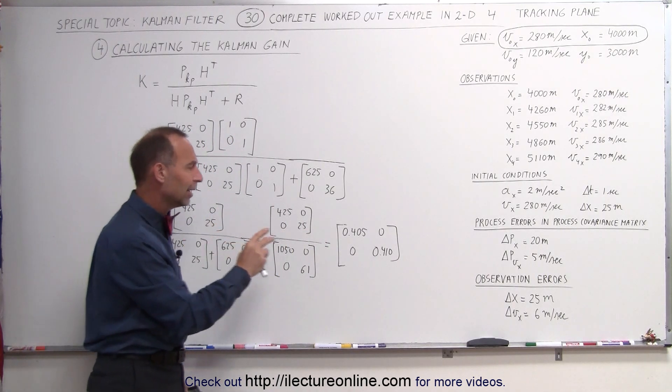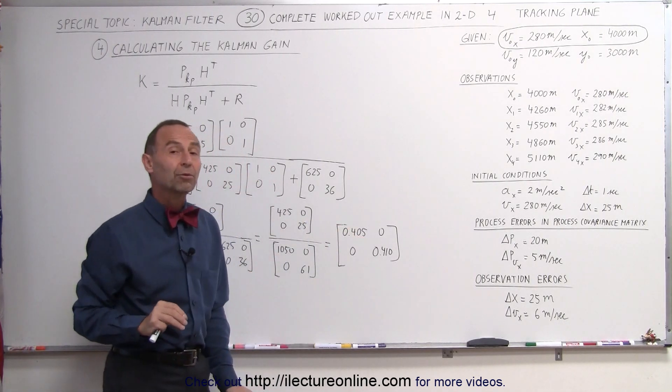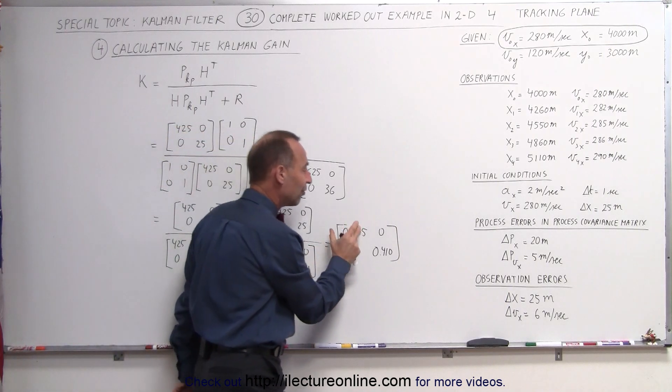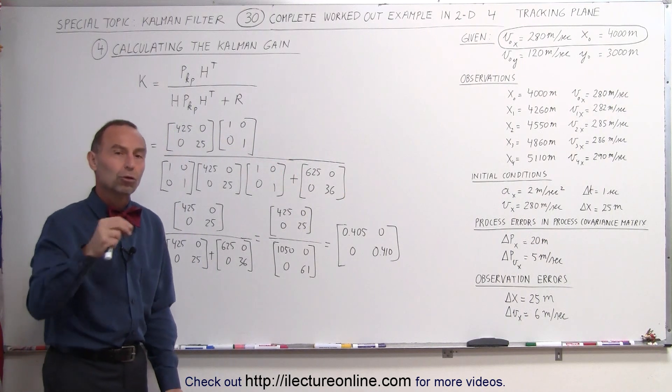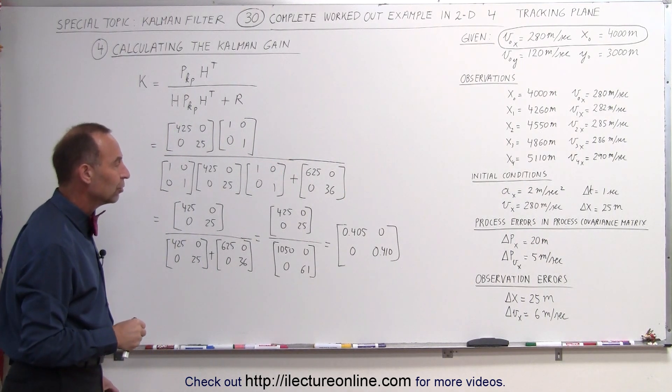What this is saying is that we don't want to put too much merit in the observation, we're only going to take a fraction of the observational update in order to predict the new state, the new position and the new velocity of the new state.